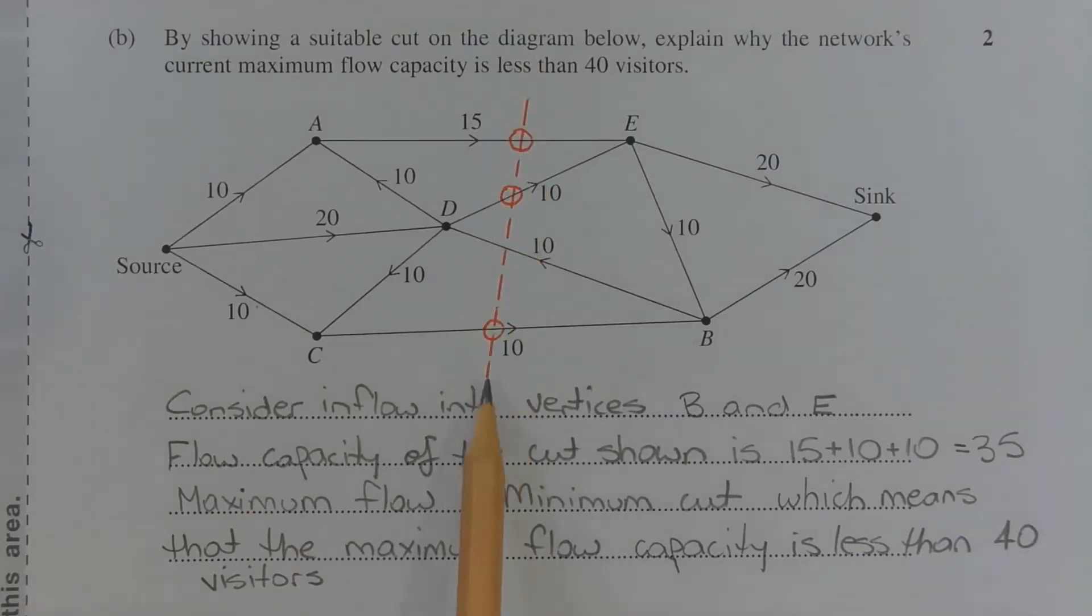The cut drawn here cuts paths AE, DE, DB, and CB. And this cut cuts off the inflow into vertex E and vertex B. So considering the inflow into those vertices, the flow capacity of the cut shown is 15 plus 10 plus 10, which equals 35.